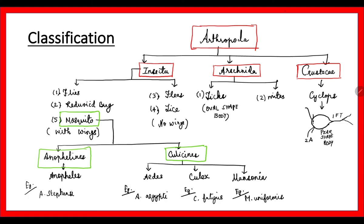Coming to the classification: the phylum Arthropoda is classified into the classes Insecta, Arachnida, and Crustacea. Under Insecta, we classify into winged and wingless. Under winged, we have flies, reduviid bugs, and mosquitoes. Under mosquitoes, we classify into two important categories: Anophelinae and Culicinae. In Anophelinae, it is the Anopheles mosquito, and in Culicinae, it is Aedes, Culex, and Mansonia.